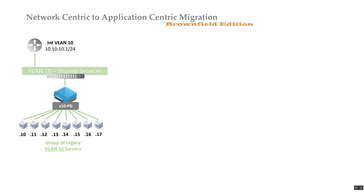The default gateway for this subnet is on the core switch, or possibly routed access — it doesn't really matter. There has to be a default gateway somewhere, and in modern networks it's typically on a layer 3 switch. So there's an SVI for VLAN 10 with 10.10.10.1/24 as the default gateway on a core or routed-access layer 3 device.